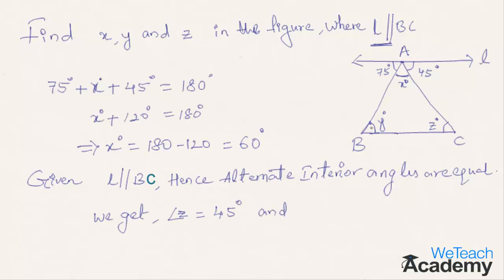In a similar manner, we can also say that y equals 75 degrees, which is also a pair of alternate interior angles. Since the alternate interior angles are equal, y and 75 degrees is one pair, and 45 degrees and z is the other pair.